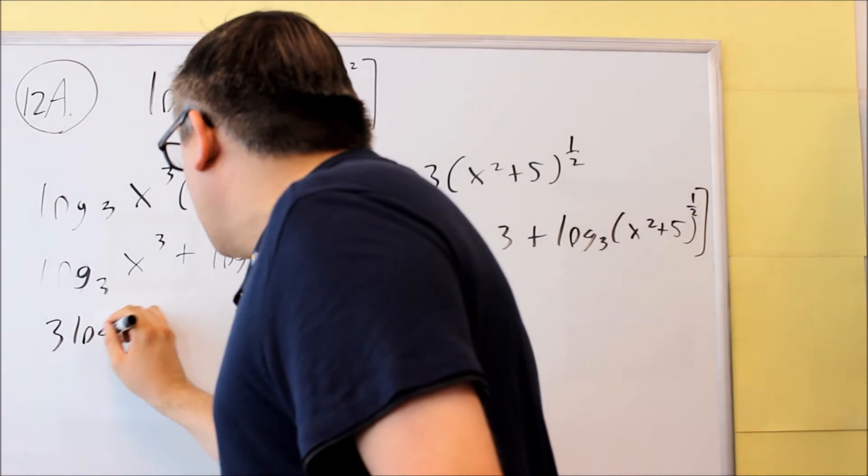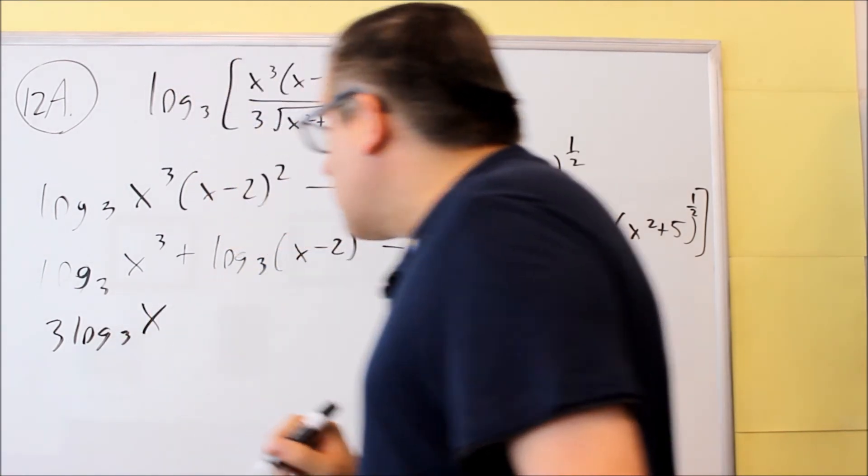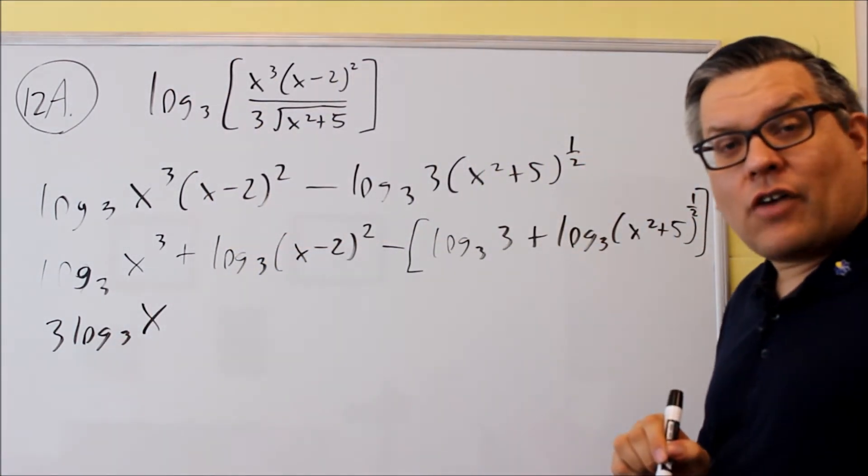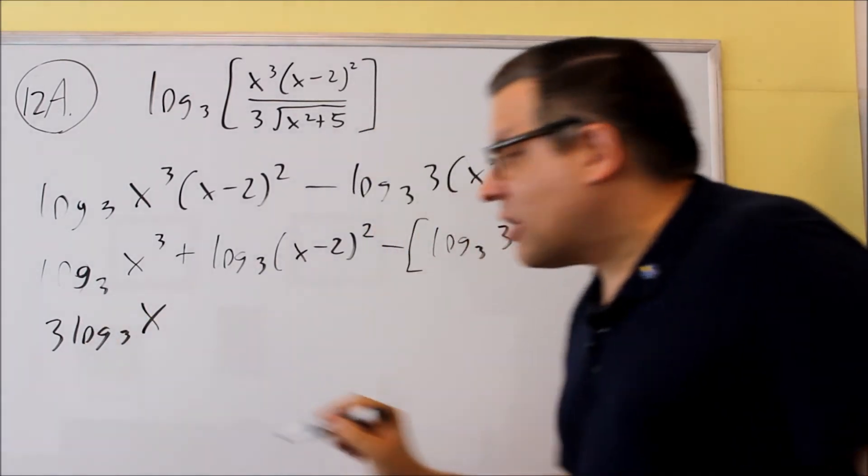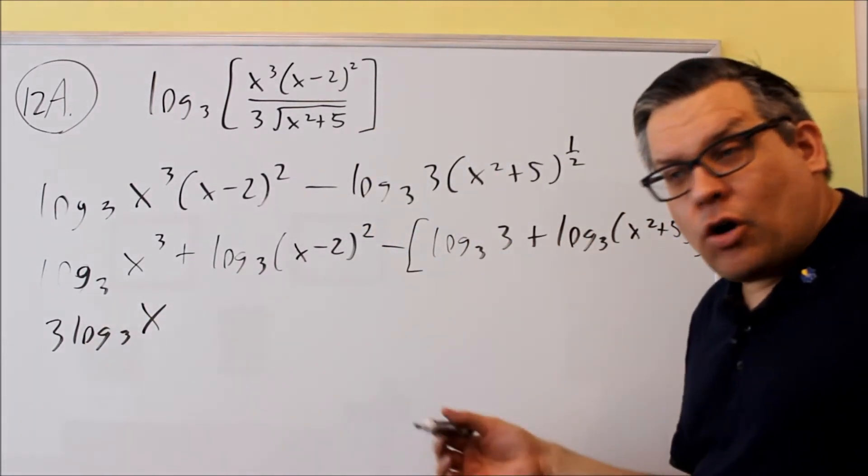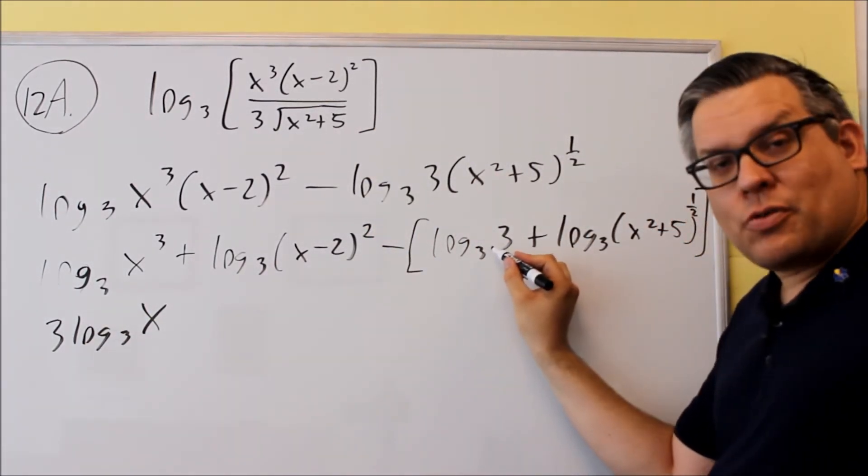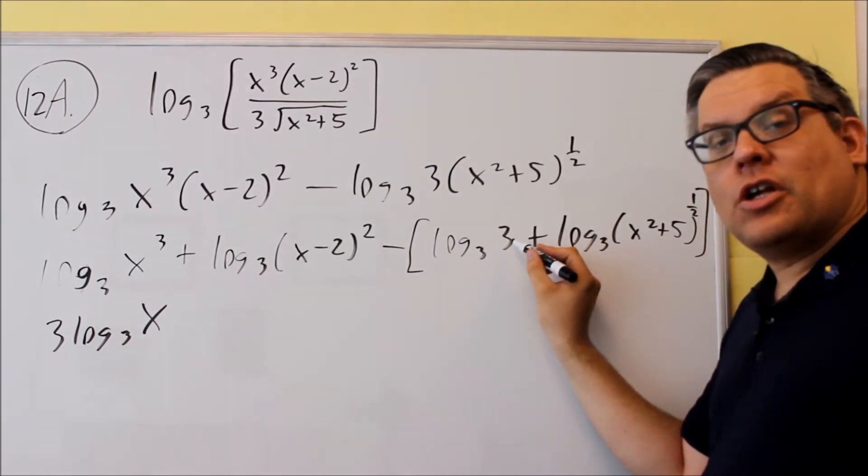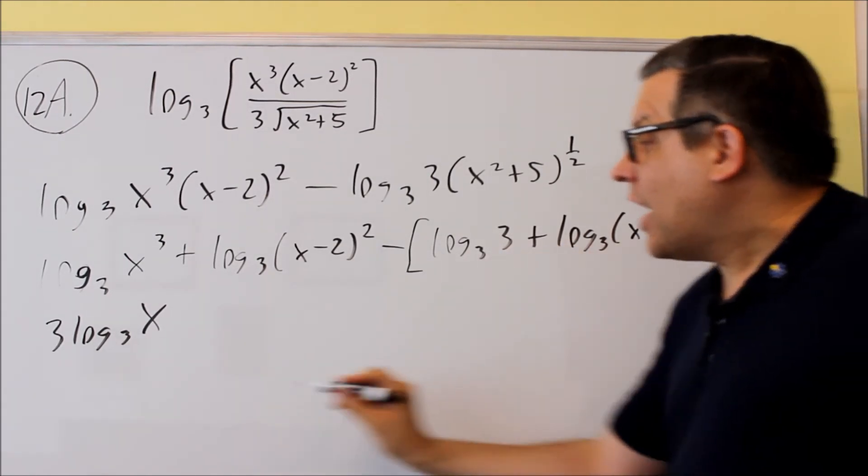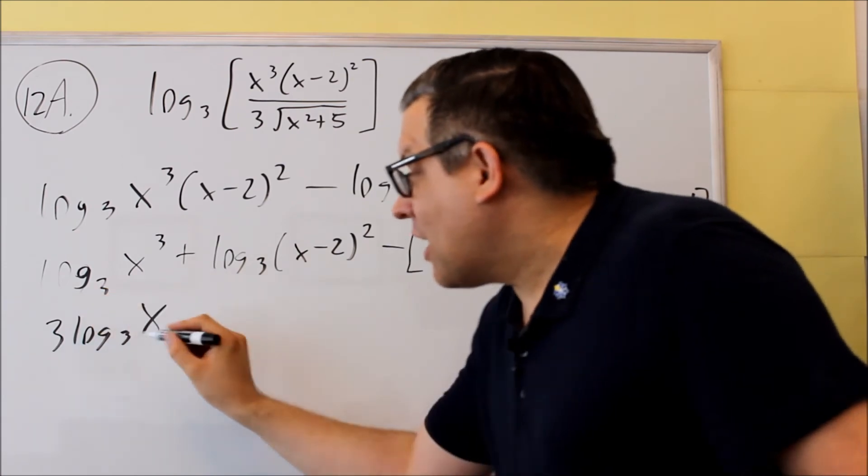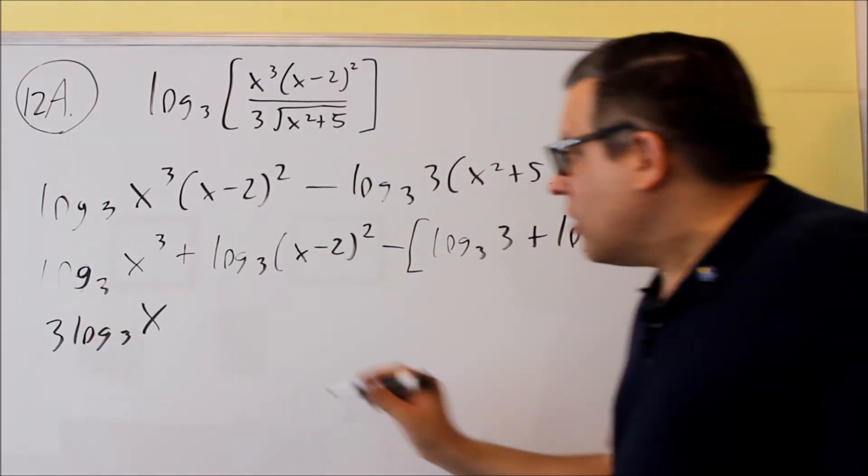Alright, so 3 comes down, I have 3 log 3 x. So a question I'm often asked is, do these cancel out because you have a 3 and a 3? No. It has to be written in this position. The 3 has to come immediately after the small 3 here, not in front. So I can't cancel those 3's out. It's going to stay just like that.